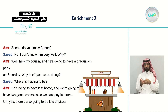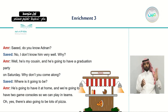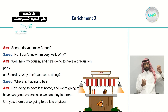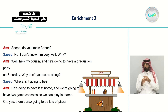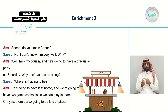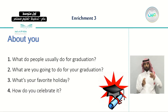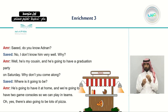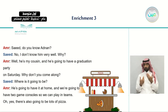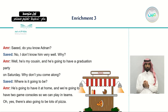After this we listened to a conversation between Amr and Saeed, where each of them talked about their plans. Amr was trying to invite Saeed to his cousin's graduation party, and Saeed was asking for more details about the party to decide whether to join him or not.